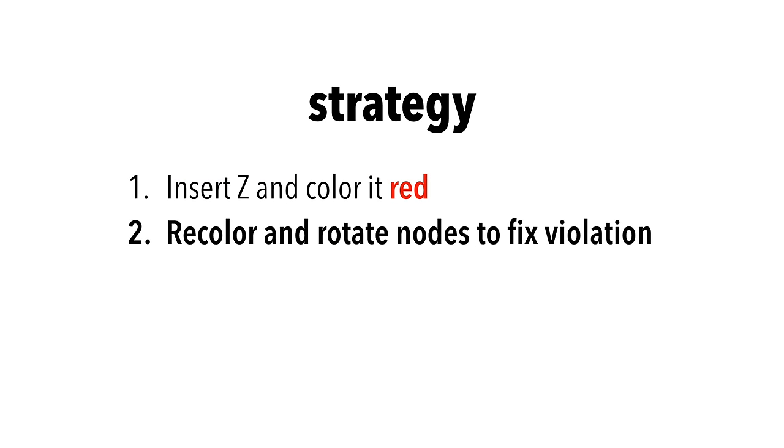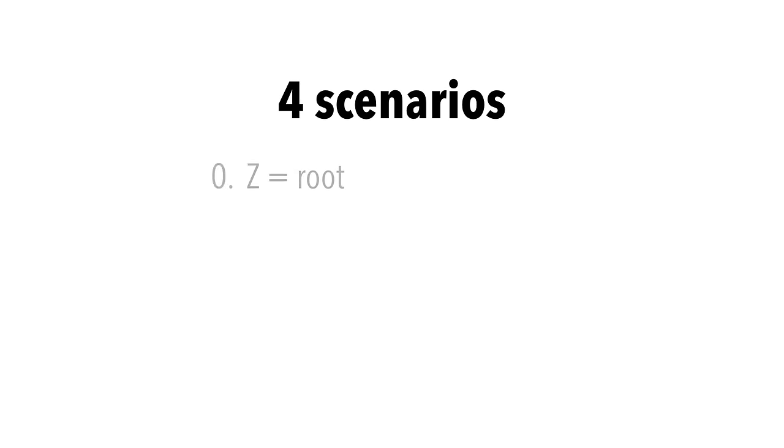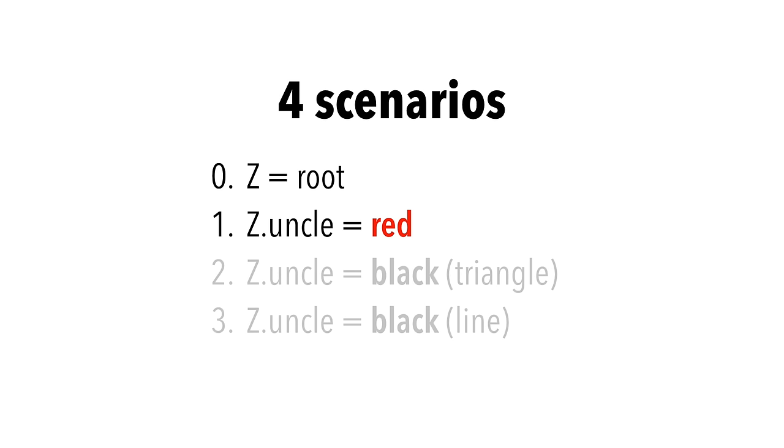Let's break down step 2 in our strategy. After we insert the node and color it red, there will be four main scenarios we can encounter that will need further attention. Z could be the root, Z's uncle might be red, and Z's uncle might be black.